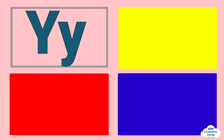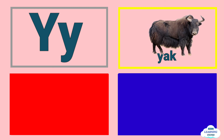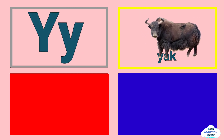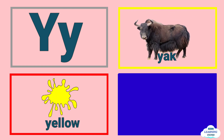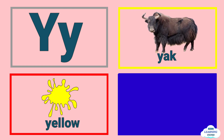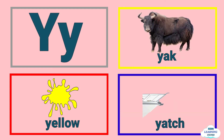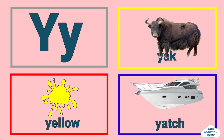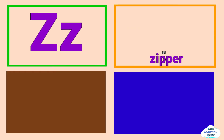Y is for yak, yak. Y is for yellow, yellow. Y is for yacht, yacht. Z is for zipper, zipper.